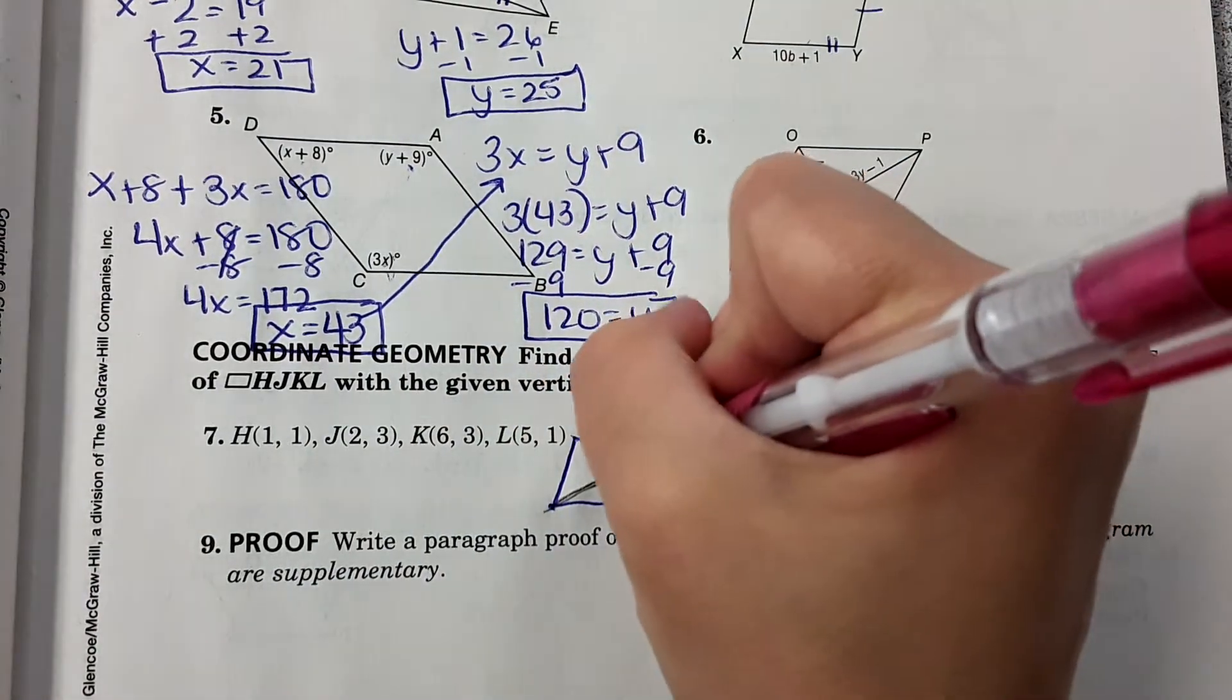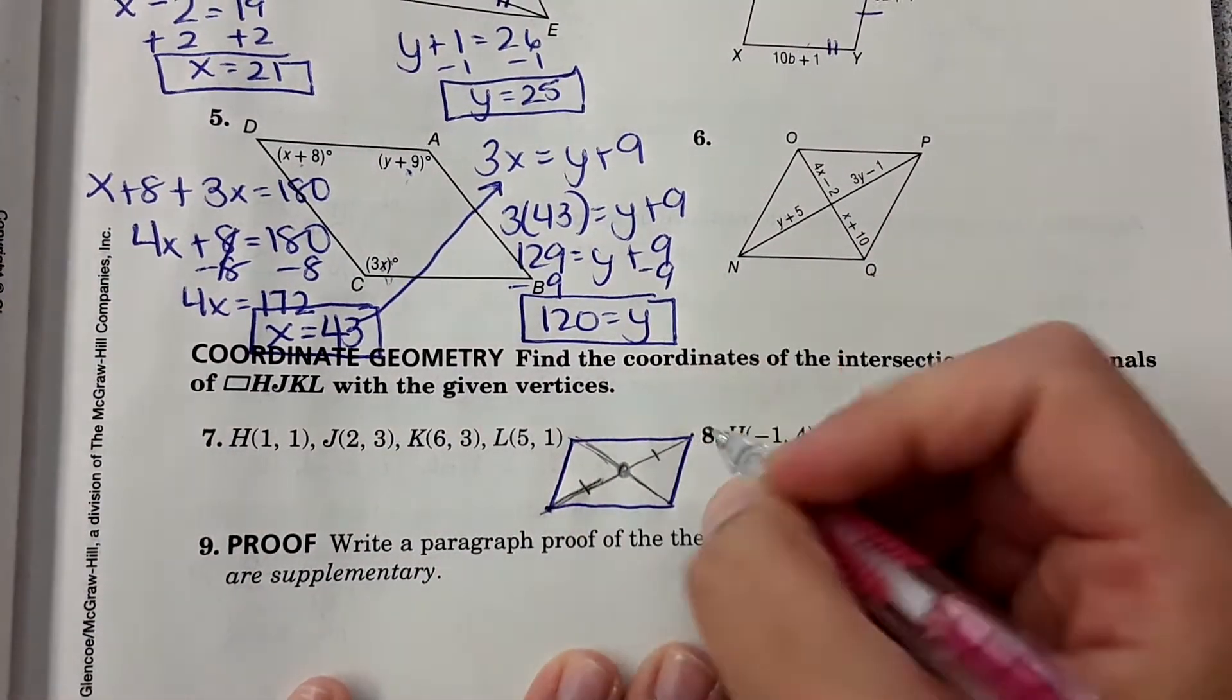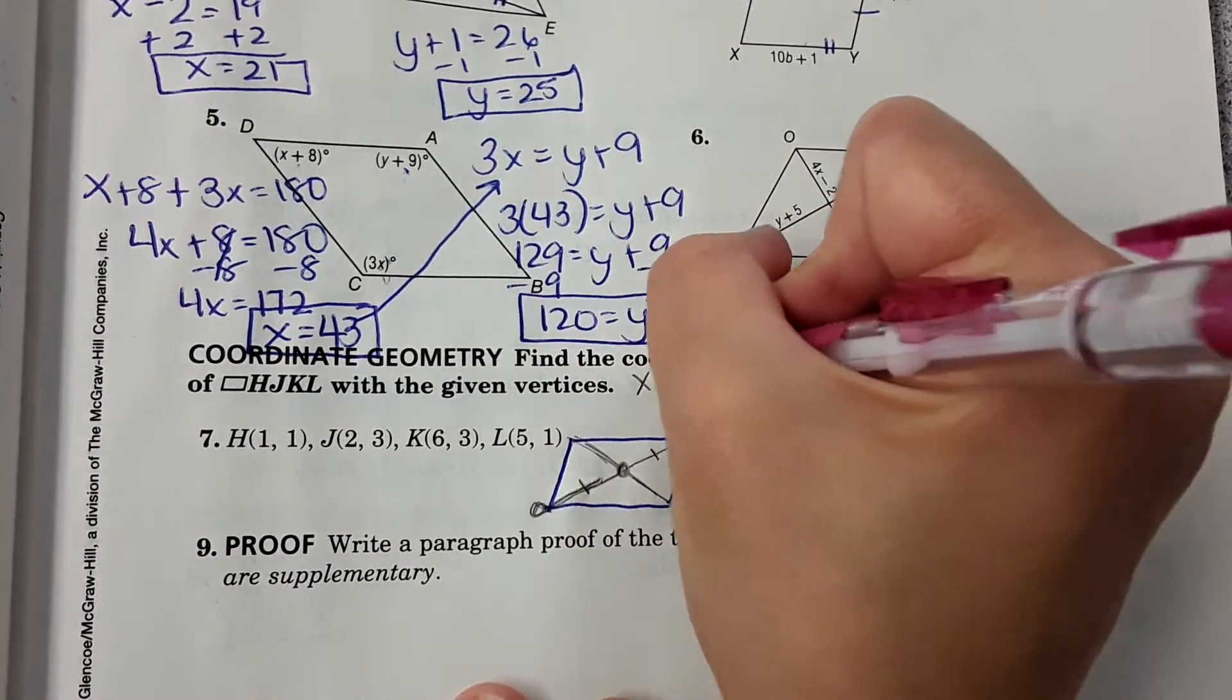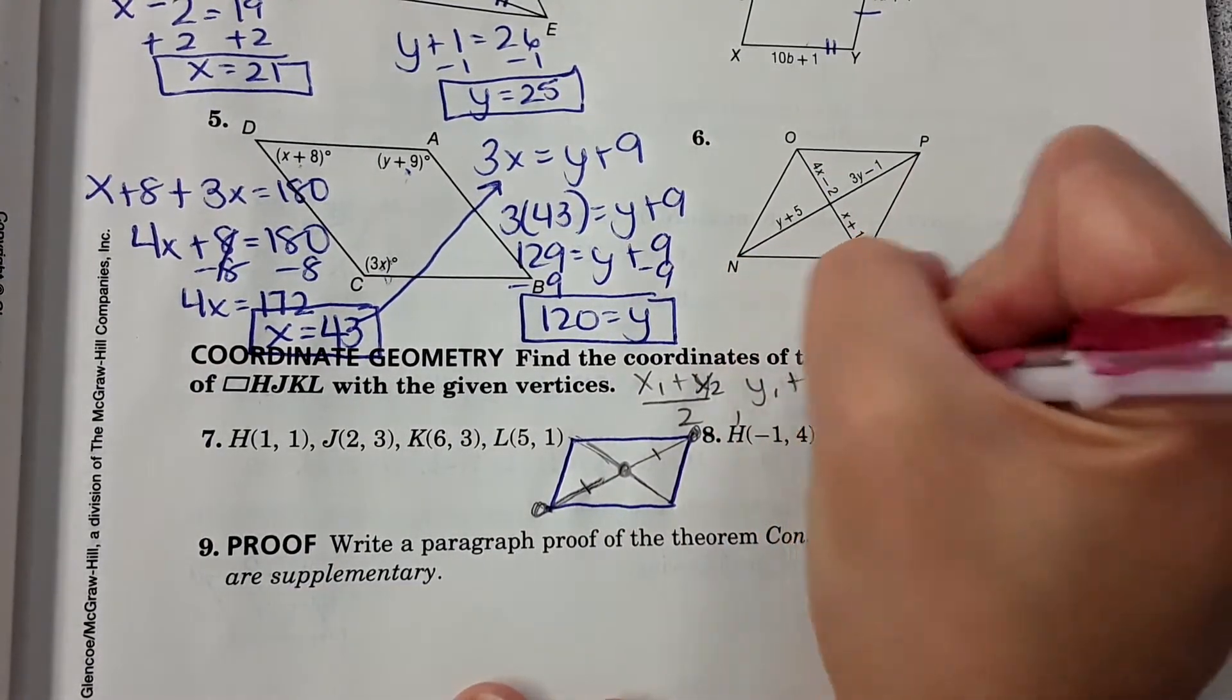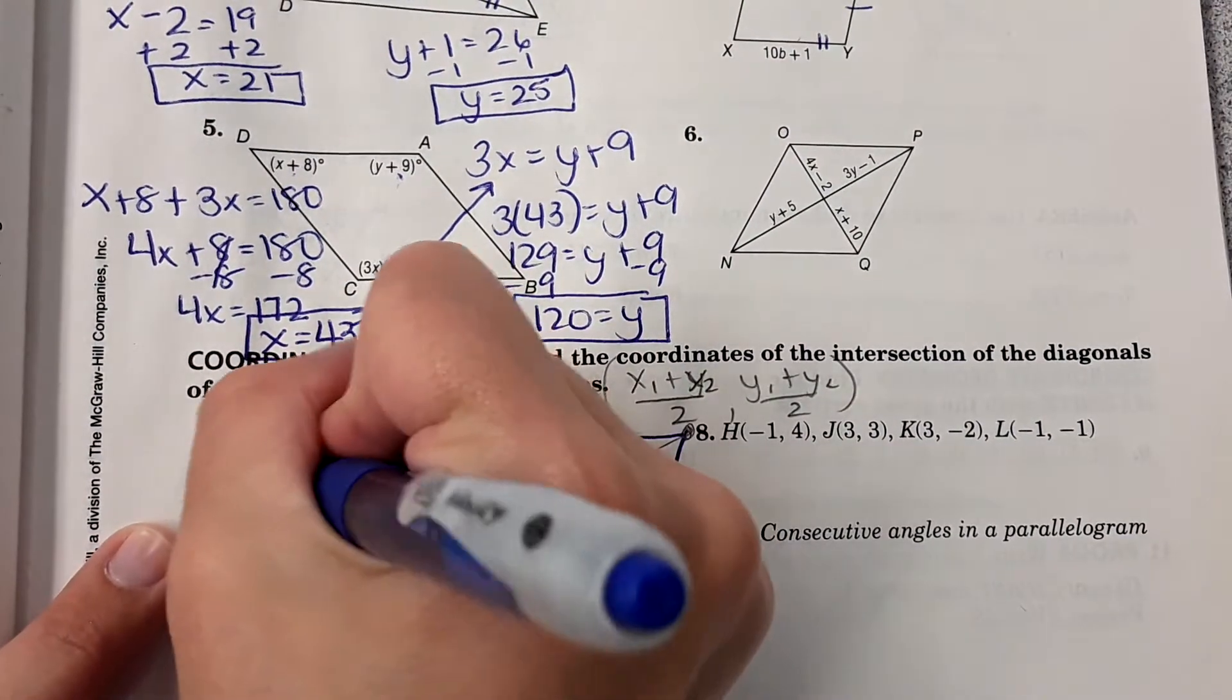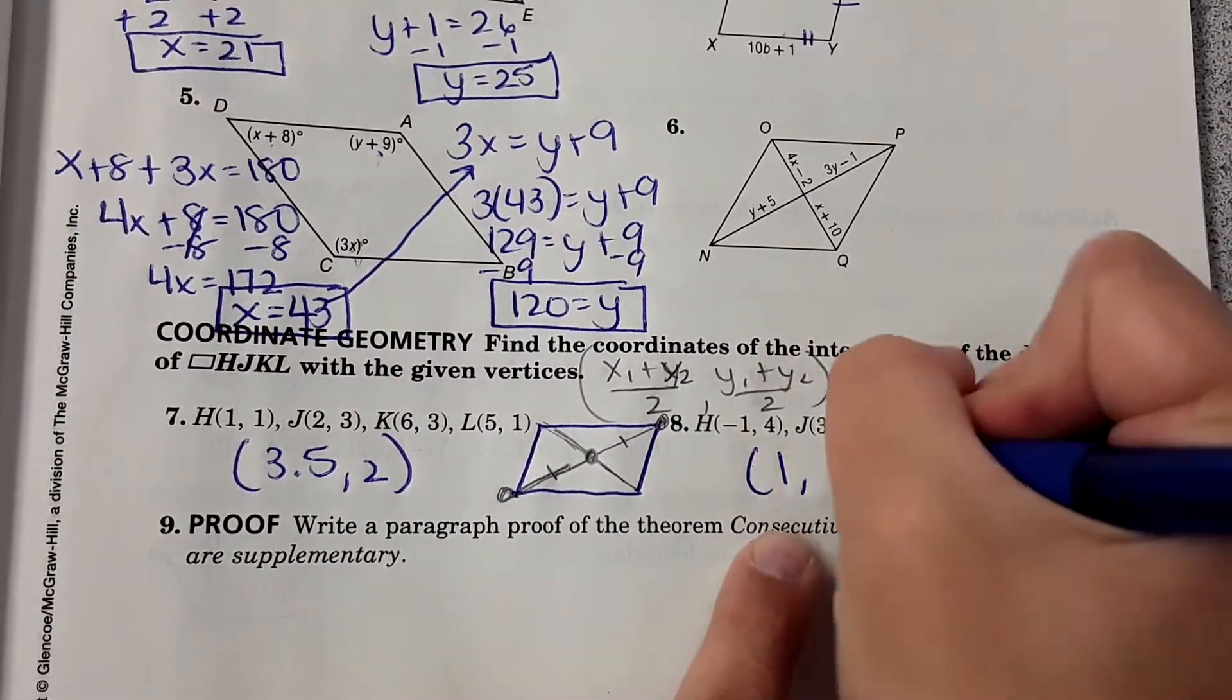Where they intersect is what they're looking for. That intersection is the midpoint between these two points, so you could solve for midpoint. You would use x1 plus x2 over 2, y1 plus y2 over 2, or you could just draw it out and eyeball it to find the answer. This one intersects at 3.5, 2. This one intersects at 1, 1.